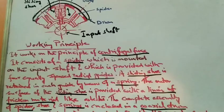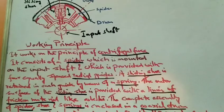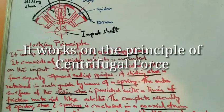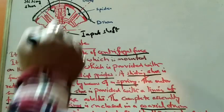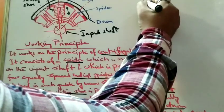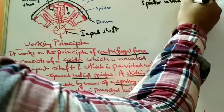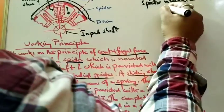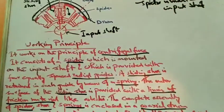Now the working principle of the centrifugal clutch: as the name suggests, it works on the principle of centrifugal force. It consists of a spider which is mounted on the input shaft. So first, the spider is mounted on the input shaft.